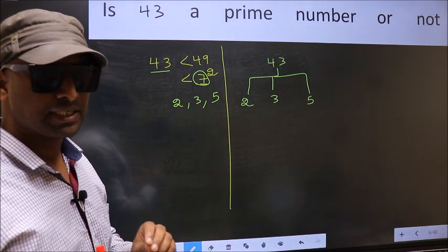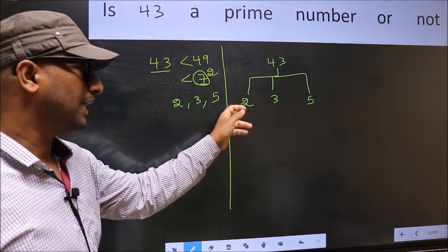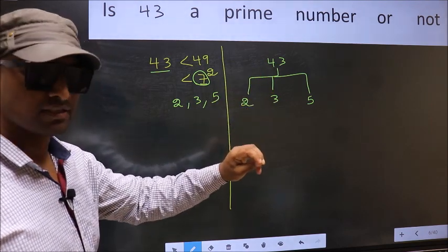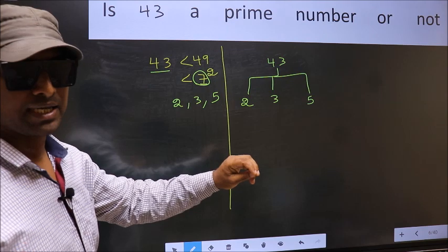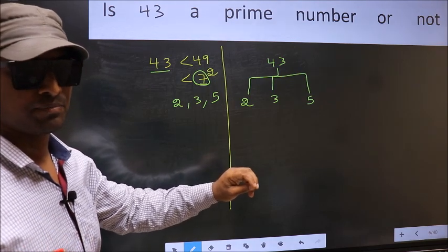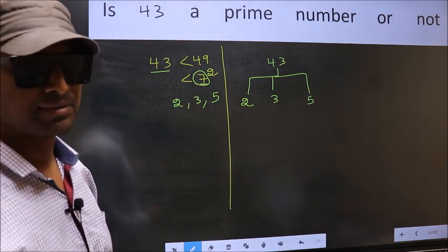Did you understand the method? If 43 is divisible by any one of these numbers, it's not prime. Otherwise, it's prime. Now let us check the divisibility.